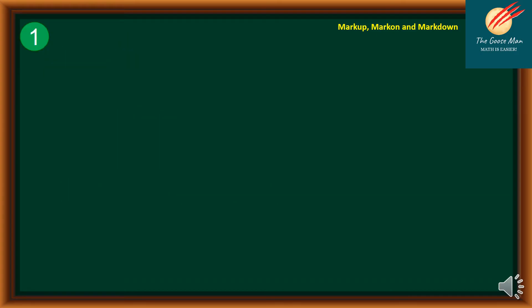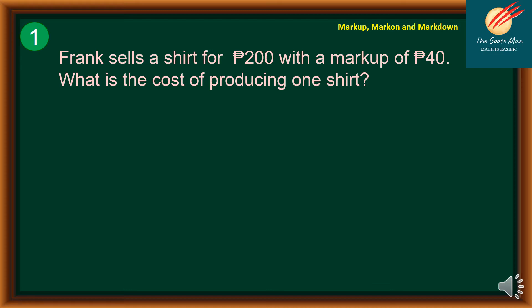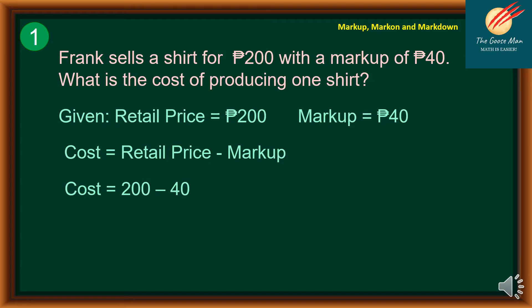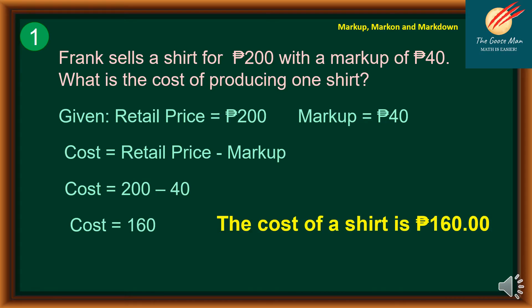Application number one: Frank sells a shirt for 200 pesos with a markup of 40 pesos. What is the cost of producing one shirt? Given: retail price = 200 pesos, markup = 40 pesos. To find the cost: cost = retail price minus markup = 200 minus 40. Therefore, the cost of a shirt is 160 pesos.